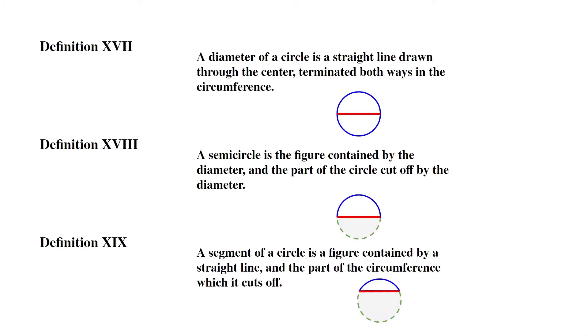Definition XVII: A diameter of a circle is a straight line drawn through the center, terminated both ways in the circumference. This basically means that the diameter goes through the center, it's a straight line, and it touches two sides of the circle's circumference.